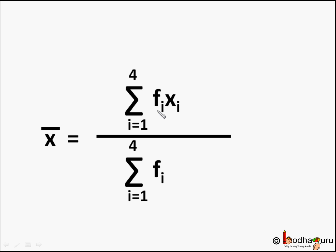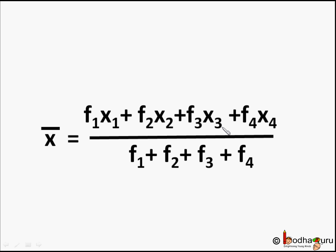In brief for this example the mean, that is x̄, equals sigma fi xi divided by sigma fi where i varies from 1 to 4. So mean for this example is equal to f1x1 plus f2x2 plus f3x3 plus f4x4 divided by f1 plus f2 plus f3 plus f4.